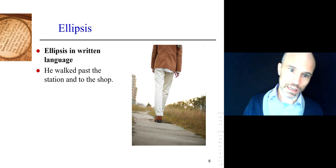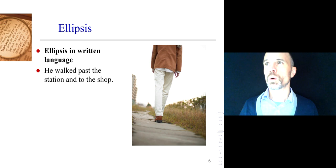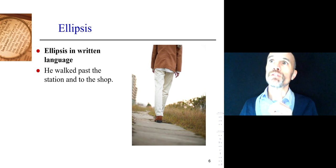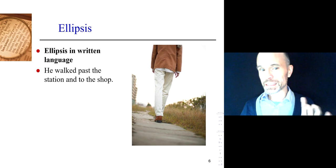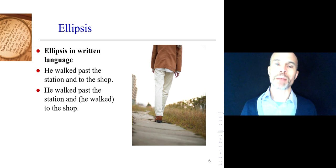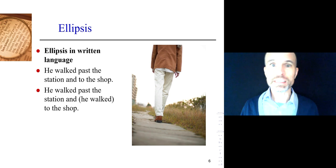In written language, here's another example: 'he walked past the station and to the shop.' Think about the full thing being said here. If you wanted to say every word that is meant, it's 'he walked past the station and he walked to the shop.' 'Past the station' is a prepositional phrase. I can't just say 'past the station' on its own — you need more information. He walked — subject, verb — he walked where? Past the station. Then you have 'and,' a coordinating conjunction that joins two equal things.